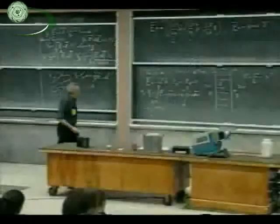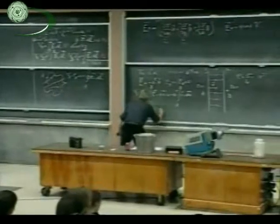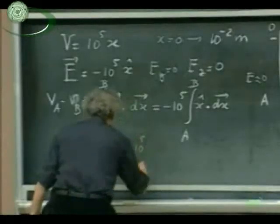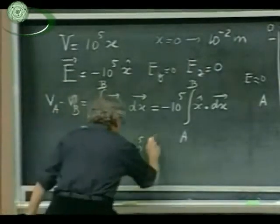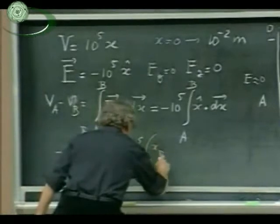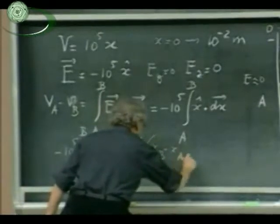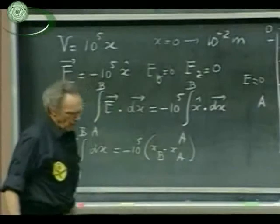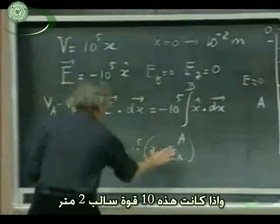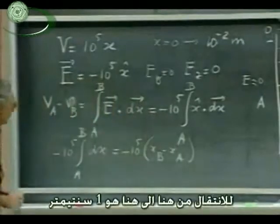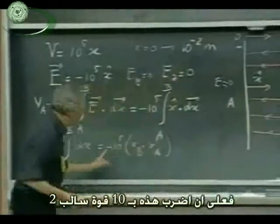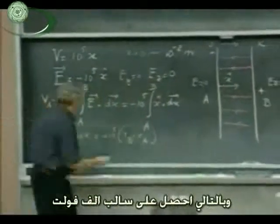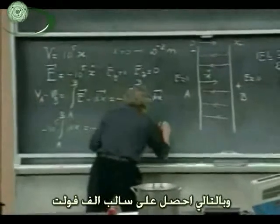And so this becomes minus 10^5 times the integral going from A to B of dX. And that is trivial — that is minus 10^5 times the location. I have to do the integral between A and B, so I get X_B minus X_A. And if this is 10^{-2} meters, to go from here to here I must multiply this by 10^{-2}. So I get that this is minus one thousand volts.